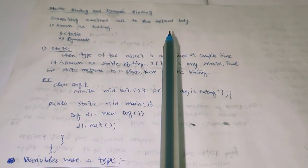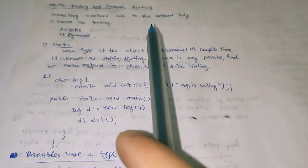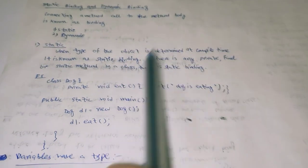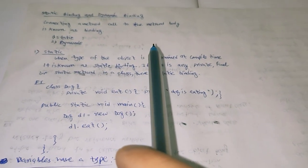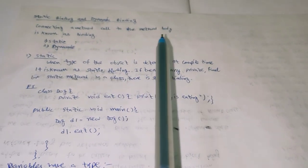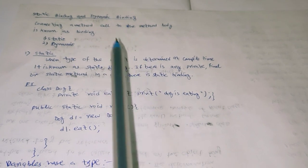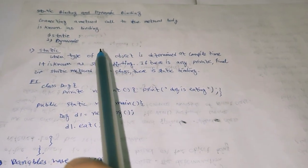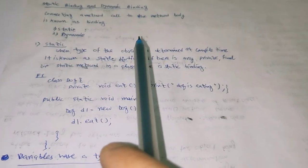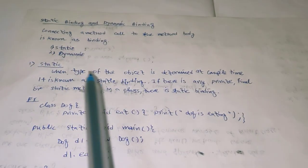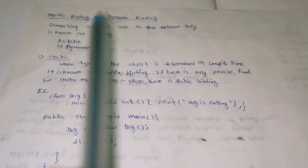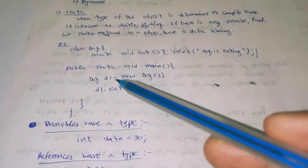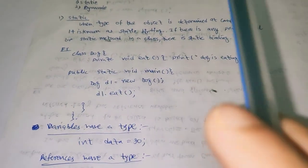Inside Java, constructor overloading and method overloading are also possible. This is our entire discussion of static binding, along with the example of static binding.